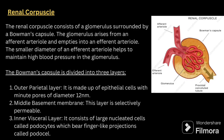The renal corpuscle consists of the glomerulus surrounded by Bowman's capsule. The glomerulus arises from an afferent arteriole and empties into an efferent arteriole. The smaller diameter of the efferent arteriole helps maintain high blood pressure in the glomerulus. Bowman's capsule is divided into three layers: the outer parietal layer, made up of epithelial cells; the middle basement membrane, which is selectively permeable; and the inner visceral layer, which consists of large nucleated cells called podocytes bearing finger-like projections.